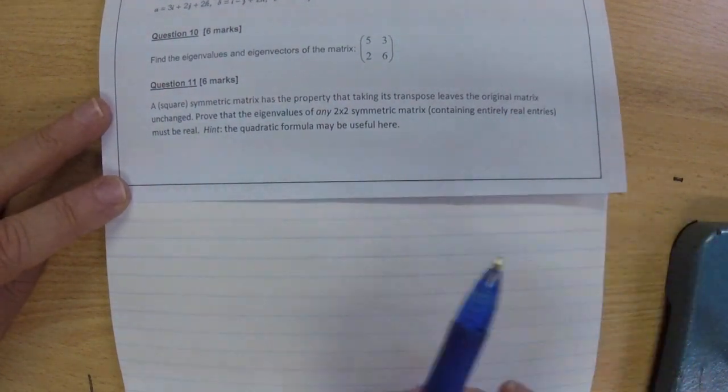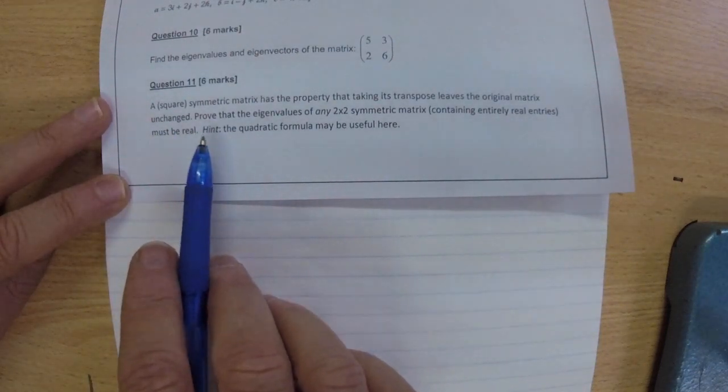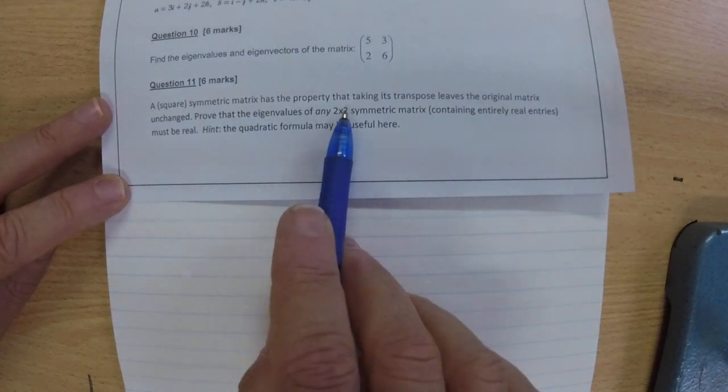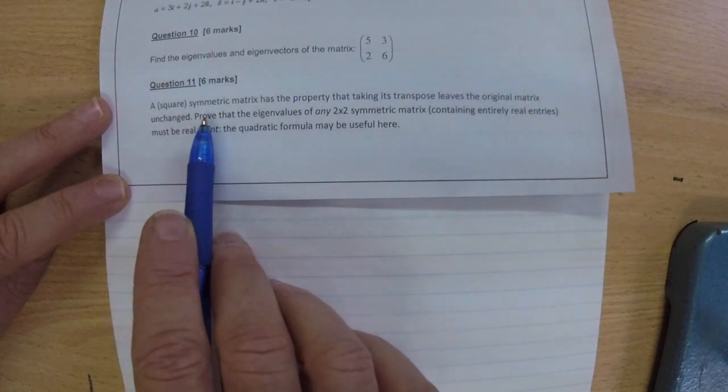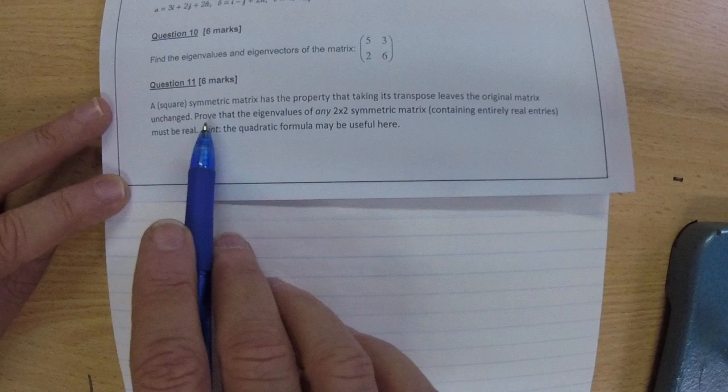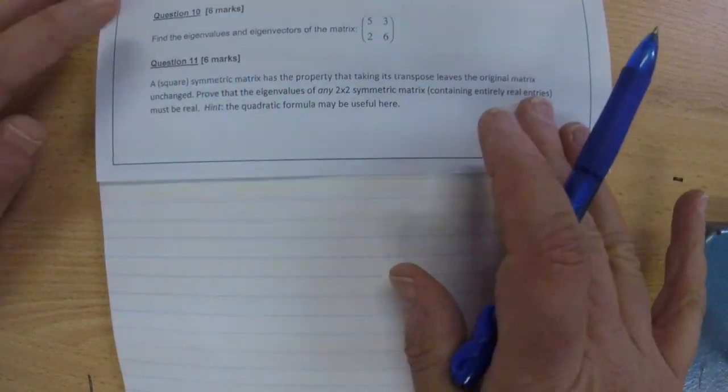Hi everyone. I'm going to demonstrate how to solve question number 11 from the review worksheet. We are told a square symmetric matrix has the property that taking its transpose leaves the original matrix unchanged. That's what they mean by symmetric, and then we have to prove something about eigenvalues. So first we have to actually get a handle on what this symmetric matrix would be like.